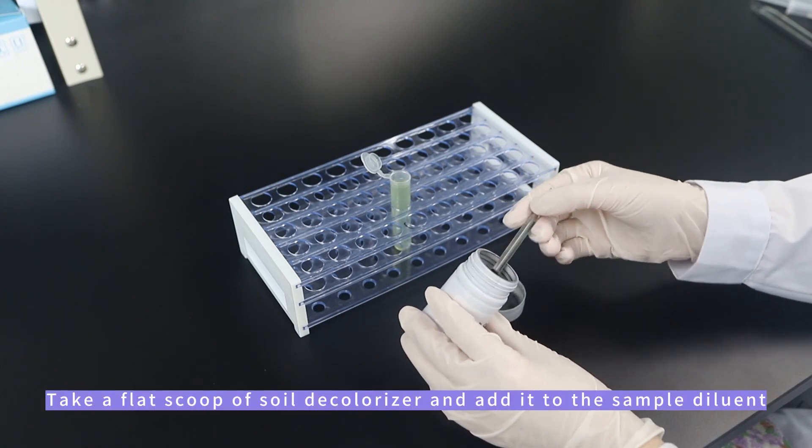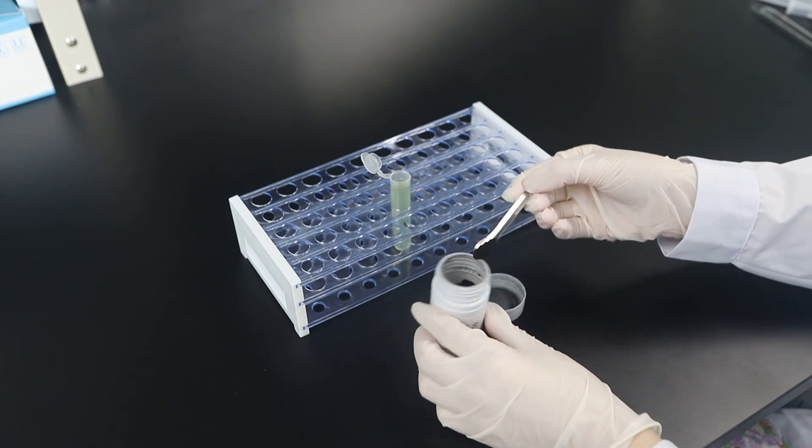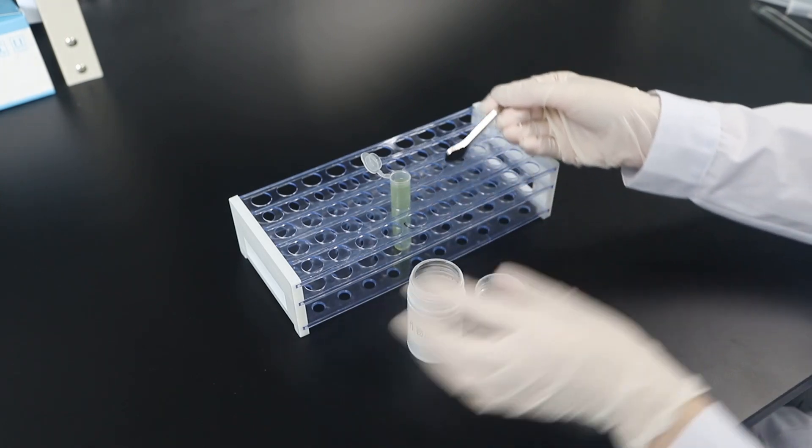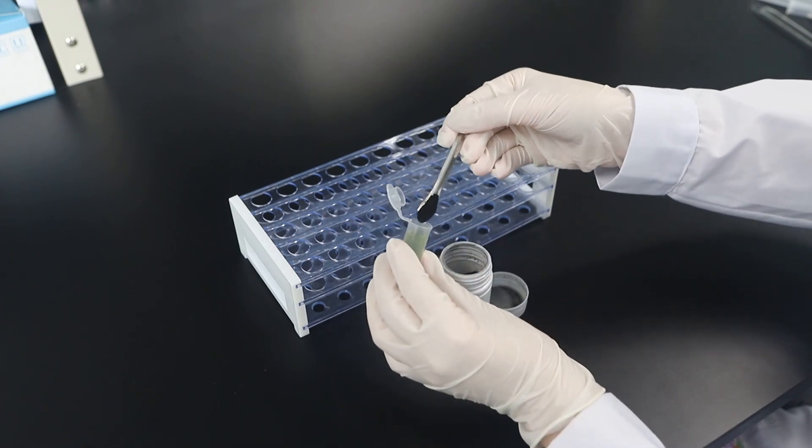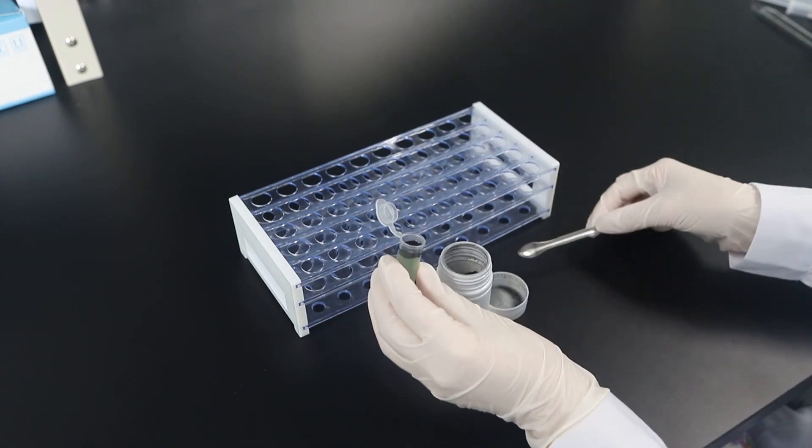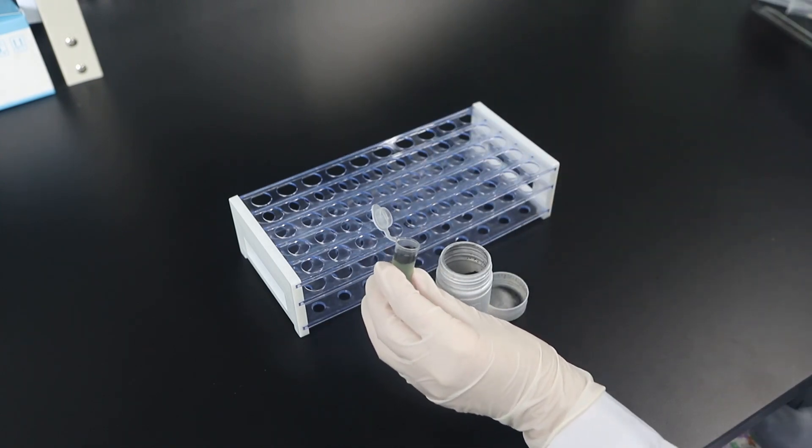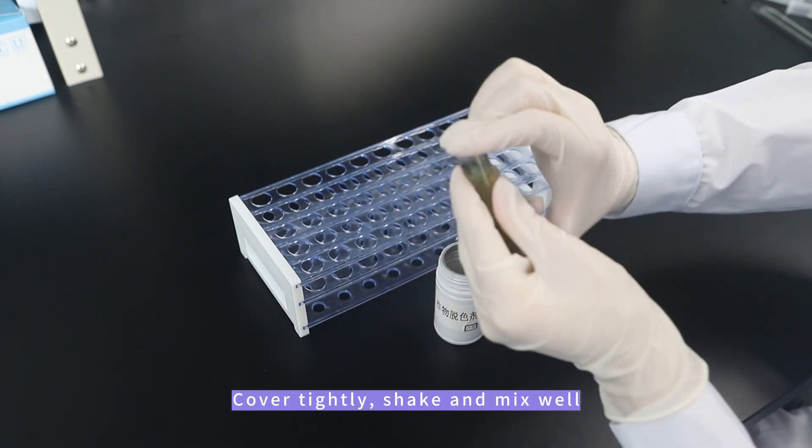Take a flat scoop of soil decolorizer and add it to the sample diluent. Cover tightly, shake and mix well.